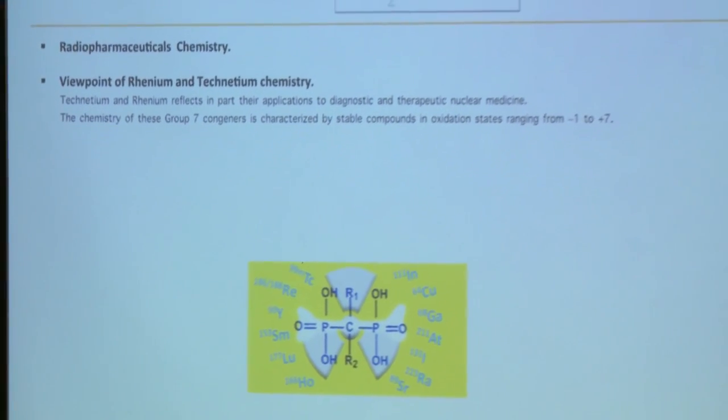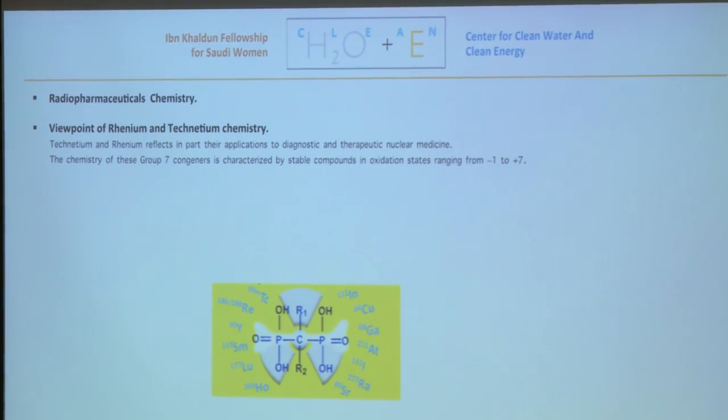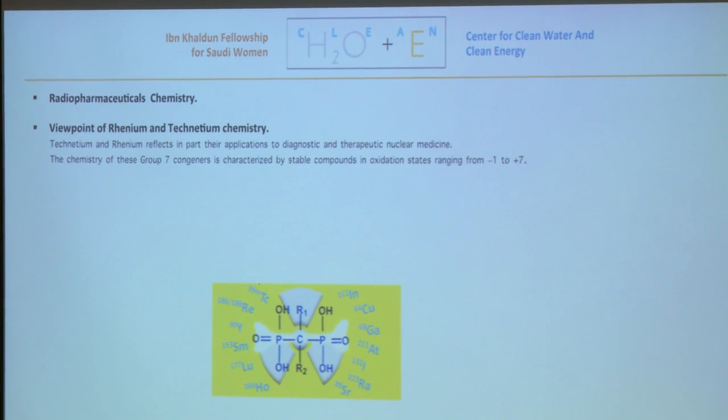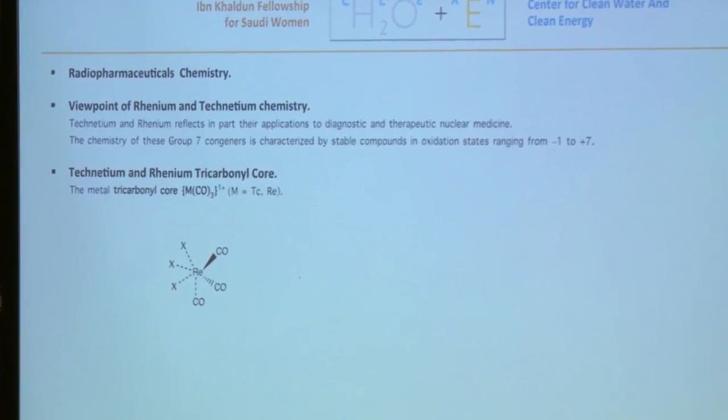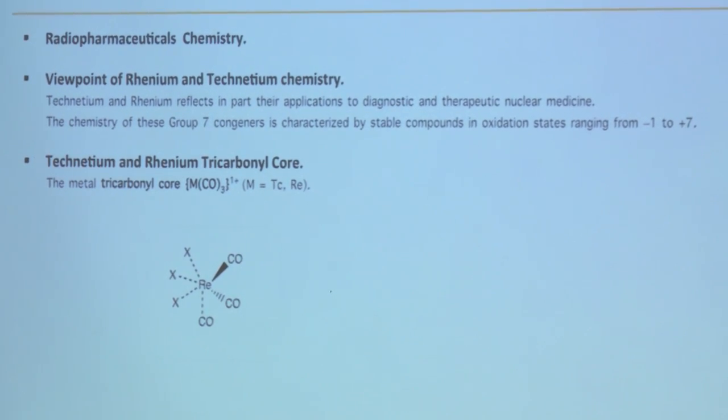Radiopharmaceuticals are drugs containing radionuclides with an end structure. They are generally used for diagnostic purposes and for therapeutic treatments. Rhenium and technetium are members of group 7, characterized by stable oxidation states and compounds from minus 1 to 7. There are many similarities found in chemistry between these two elements.